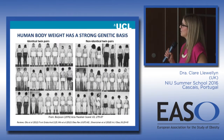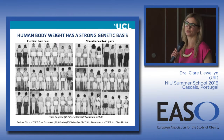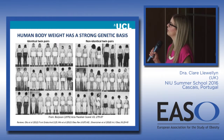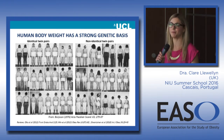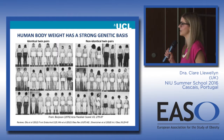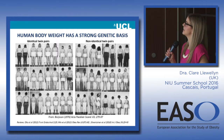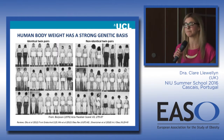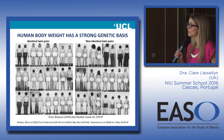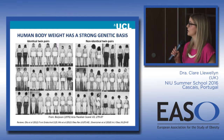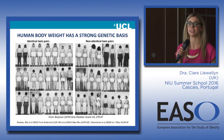I wanted to start by showing you this photograph of the body weights of identical twin children on the left and non-identical twin children on the right, just to show how similar the identical twins are for their body weight compared to the non-identical twins. This observation has been made for decades, leading researchers to propose a strong genetic component to human body weight. Meta-analyses have found that it's in the order of 50 to 90 percent of variation.